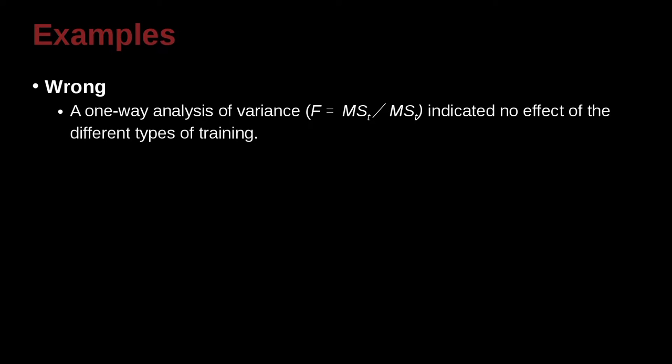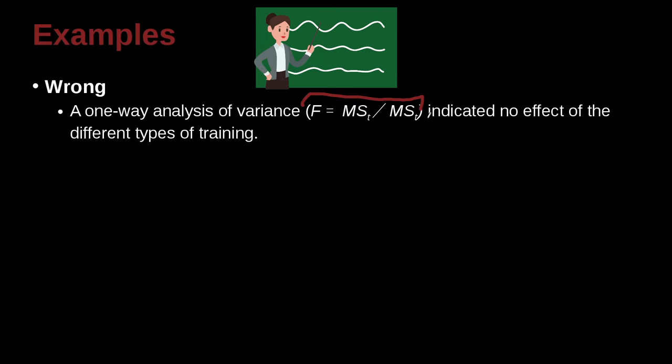The one-way analysis of variance F equals MS sub t divided by MS sub e indicated no effect of the different types of training. And of course, what we have here is, why is this wrong?